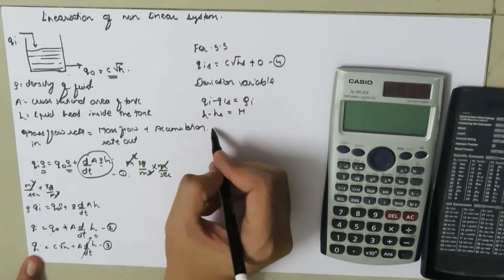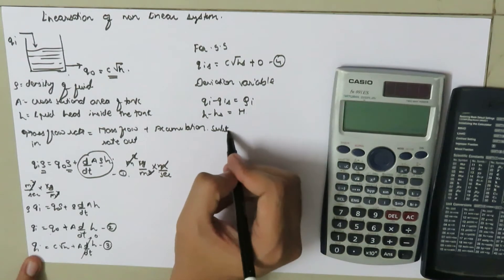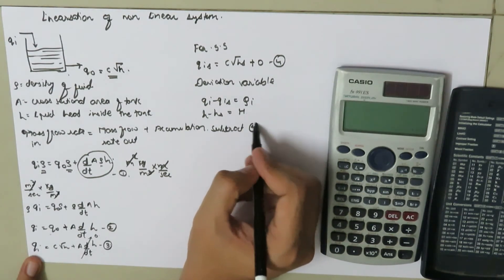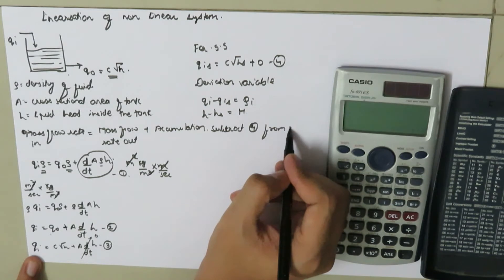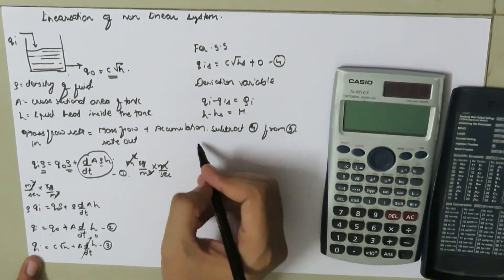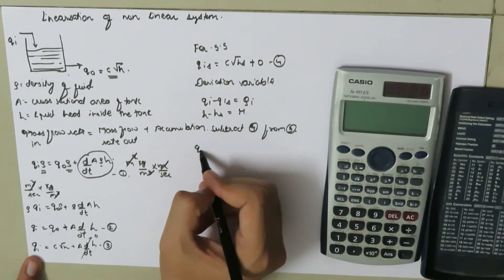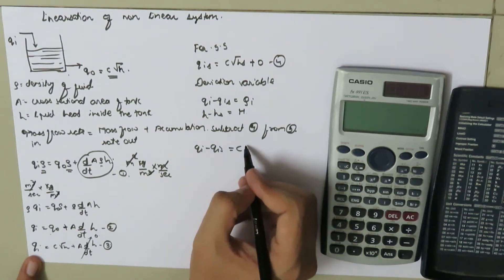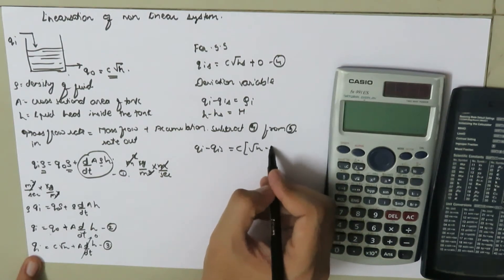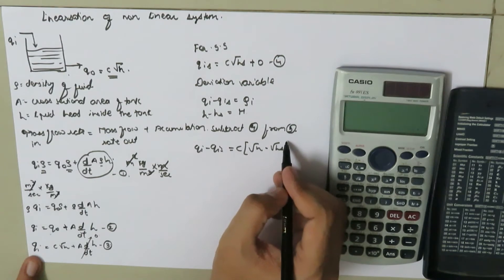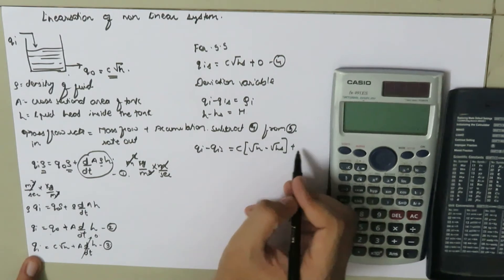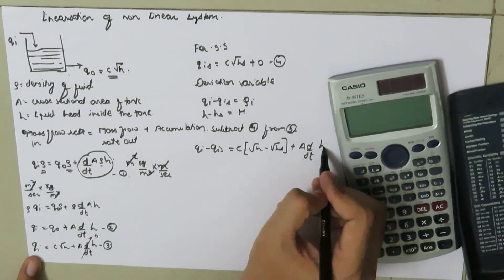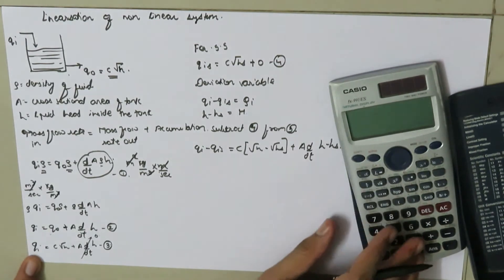Subtracting the steady-state equation from equation three gives: Q_i minus Q_i_s equals C times (√H minus √H_s) plus A times d/dt of (H minus H_s).